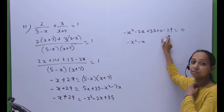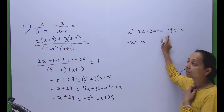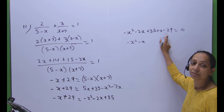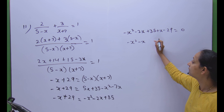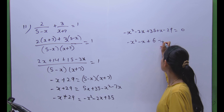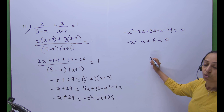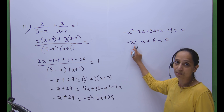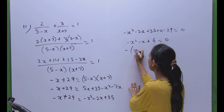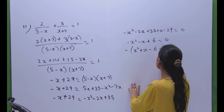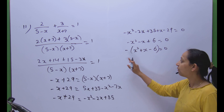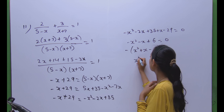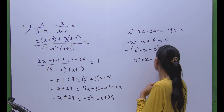So we have minus x squared minus x plus 6 equals zero. To make x squared positive, we take minus 1 common from the whole bracket, giving x squared plus x minus 6 equals zero. Dividing both sides by minus 1, we can simply write x squared plus x minus 6 equals zero.